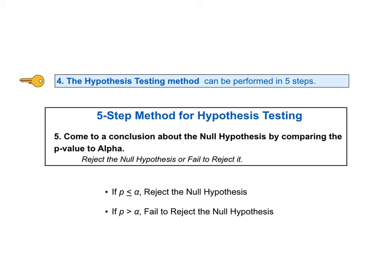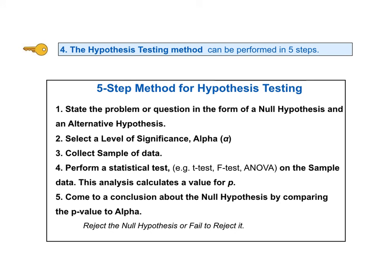Remember, the null hypothesis said there was no difference, change, or effect. Otherwise, if p is greater than alpha, the probability of an alpha error is greater than what we said we would accept, so we fail to reject the null hypothesis — that is, we conclude there is not a statistically significant difference, change, or effect. Now, instead of comparing p and alpha, we could compare the test statistic value and the critical value. The two comparisons are statistically equivalent. This is explained in the two videos on the two possible conclusions from a hypothesis test: reject the null hypothesis and fail to reject the null hypothesis. And here, one more time, is the full five-step method. Pause the video if you would like to read through them one more time.